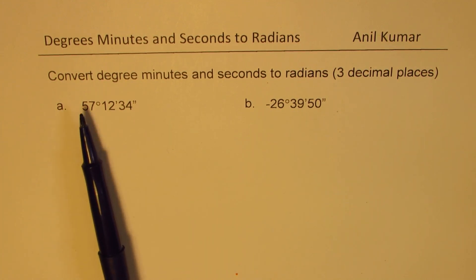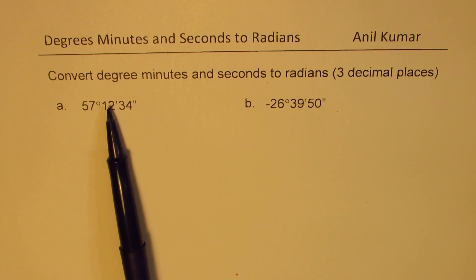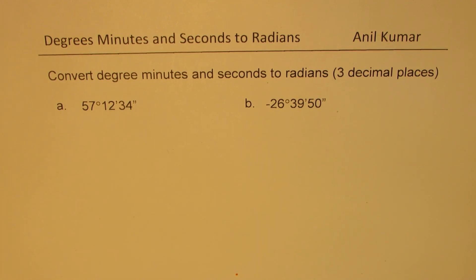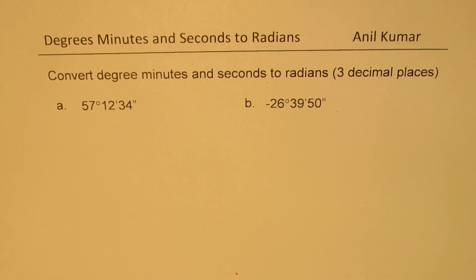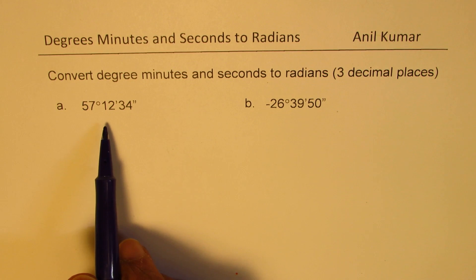We're given an angle which is 57 degrees 12 minutes and 34 seconds. The first step will be to write this in degrees, and then the second will be to write this in radians.